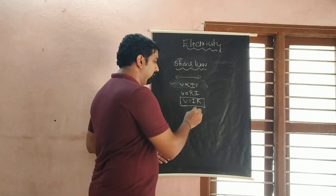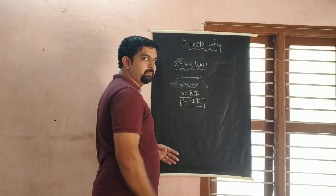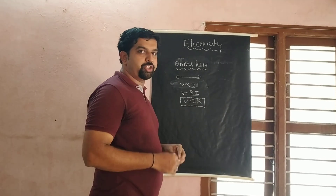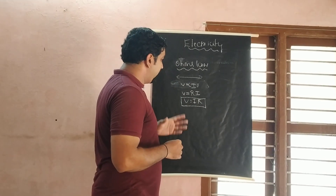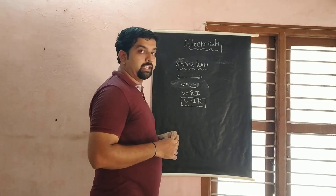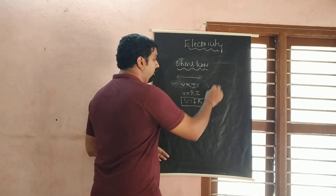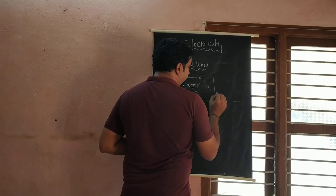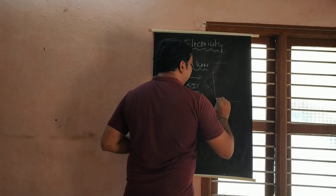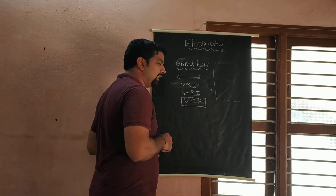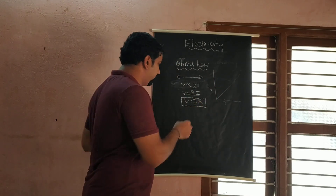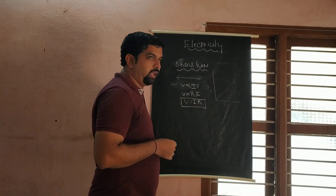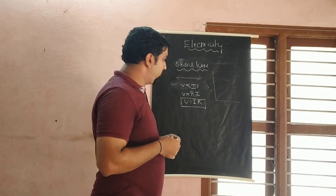In the formula V = IR, R is the resistance, I is the current, and V is the potential difference. There is also a straight line graph of V versus I related to Ohm's law. Based on that graph, there are problems to solve using both the graph and the formula.